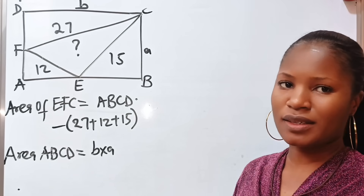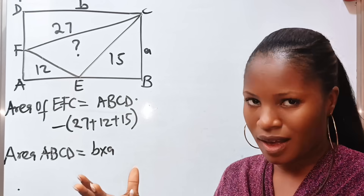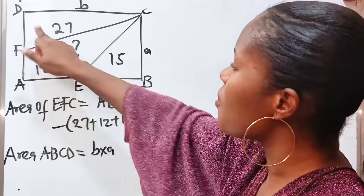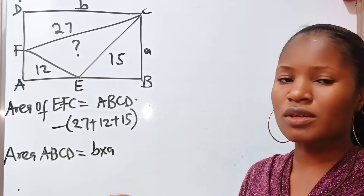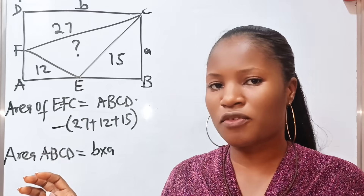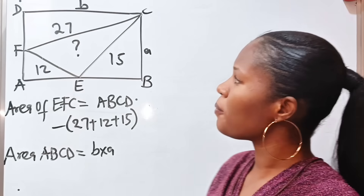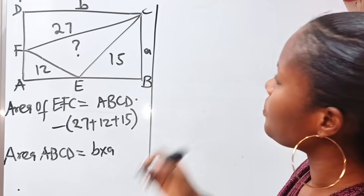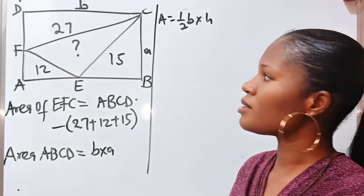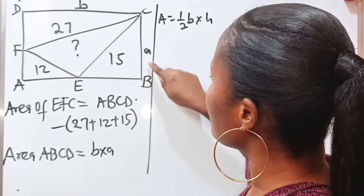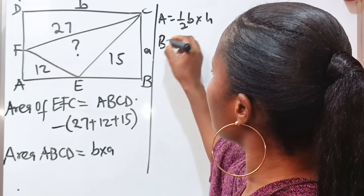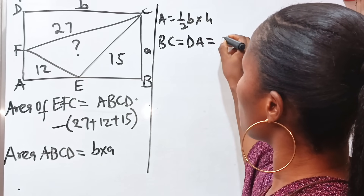The examiner gave us the areas of these three triangles to point us to the answer. The area of a triangle is half base times height. If BC is a, then DA is also small a. Note that BC equals DA equals small a. If we call DF as Y and EB as X, then BC equals DA equals small a.